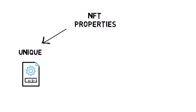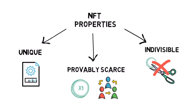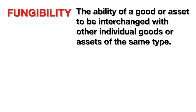Each NFT has different properties stored in the token's metadata — they are provably scarce. The value of an NFT is driven by its desirability and rarity. The blockchain protocol and public ledger maintains an authenticated record of its existence and the absence of any unauthorized copies. NFTs are also indivisible, meaning you cannot transfer a fraction of your NFT. Non-fungibility refers to the inability of a good or asset to be interchanged with another individual good or asset of the same type.